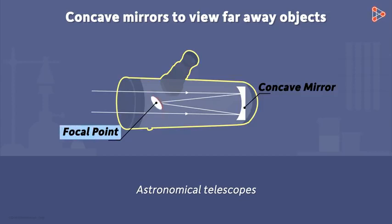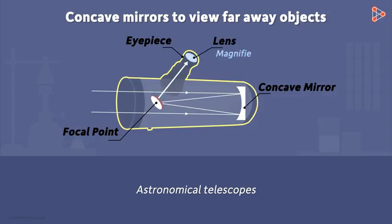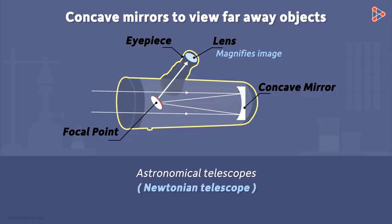The secondary mirror is then placed near this focal point, kept so that it can reflect the light upwards towards the eyepiece. The eyepiece has a lens which then magnifies this image, allowing us to see an enlarged image of a far-away object. This particular type of telescope is also called the Newtonian telescope, as it was Isaac Newton who first came up with this concept.